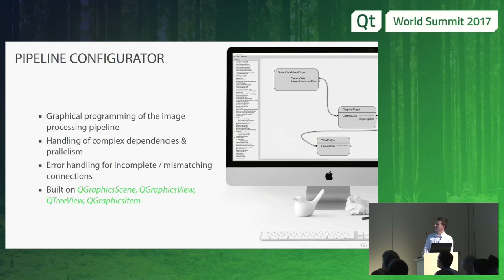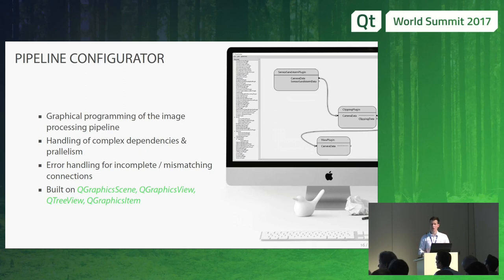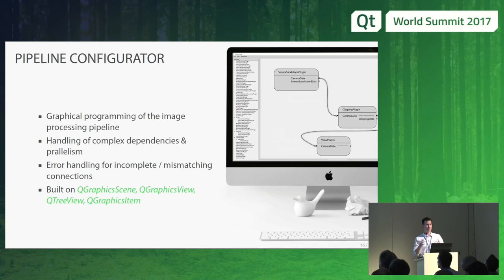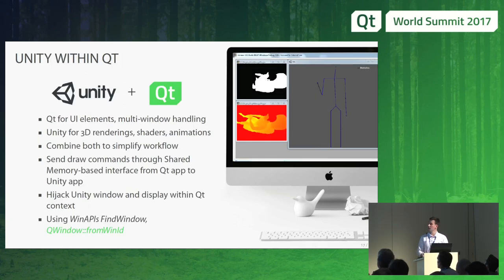One of the last things is what we call a pipeline configurator. I've talked about plugins and a tool chain — these plugins need to be organized in a clever way. Some may run in parallel, some have complex dependencies. So we designed our own visual configuration interface based on QGraphicsScene. You can see hundreds of plugins on the left that can be dragged and dropped together, and we get error messages when specific inputs are missing or outputs are not connected. This helps a lot to reduce development times and helps in the rapid prototyping phase.